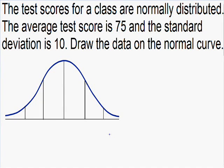Welcome to my video on normal distribution. Throughout many problems in your textbook, you're going to see a set of numbers described as normally distributed. This means that the set of numbers is balanced — not heavily skewed to the left or right. We can use this normal curve, or bell-shaped curve, to describe the data, and it's a powerful tool that allows us to predict the chance of something happening.